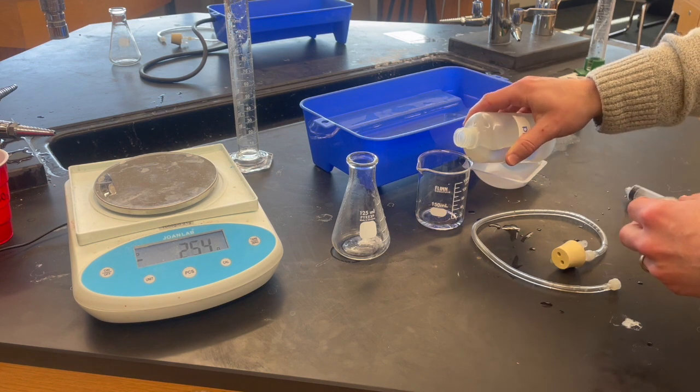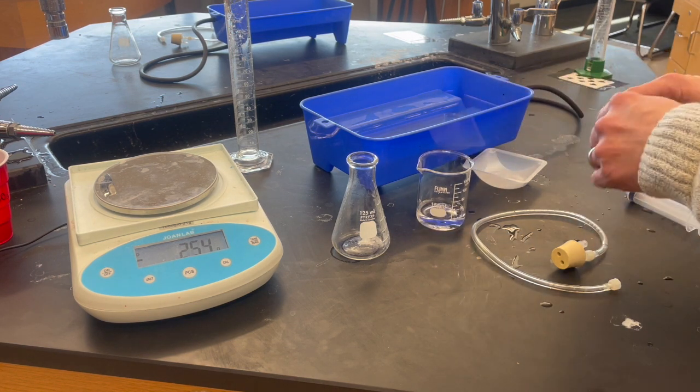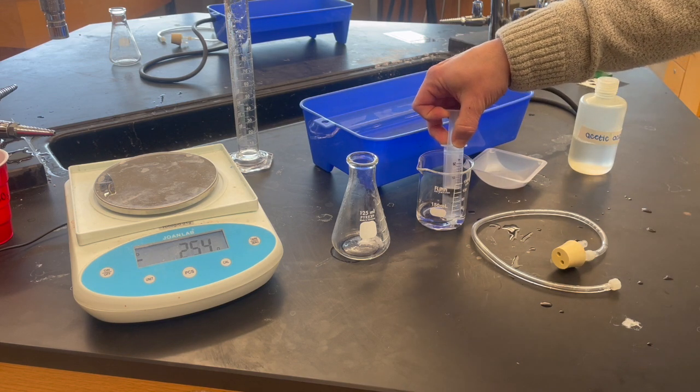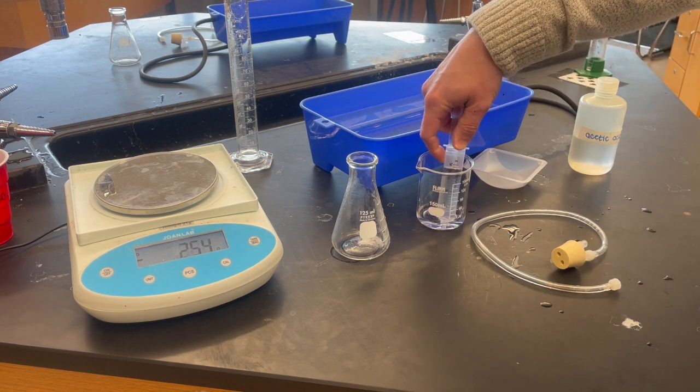The next thing I'm going to do is pour out about 25 milliliters of vinegar into this beaker, and then I'm going to use a syringe to suck up exactly 20.0 milliliters of liquid.